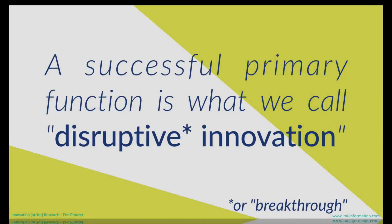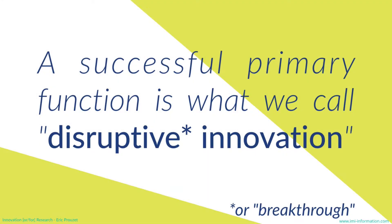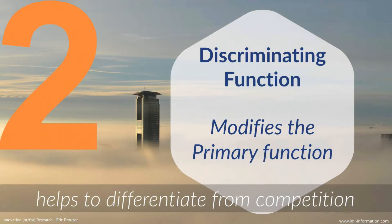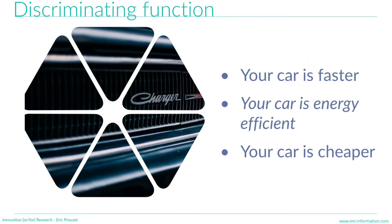When we look at the primary function, we can say that a successful new primary function is what we usually call disruptive or breakthrough innovation — when a new primary function is able to do something that we couldn't do before. The second function is what I call the discriminating function. The discriminating function modifies the primary function — in other words, it helps to differentiate from competition. When you look at different types of cars, their primary function is still to transport you from A to B, but they can do it in different ways.